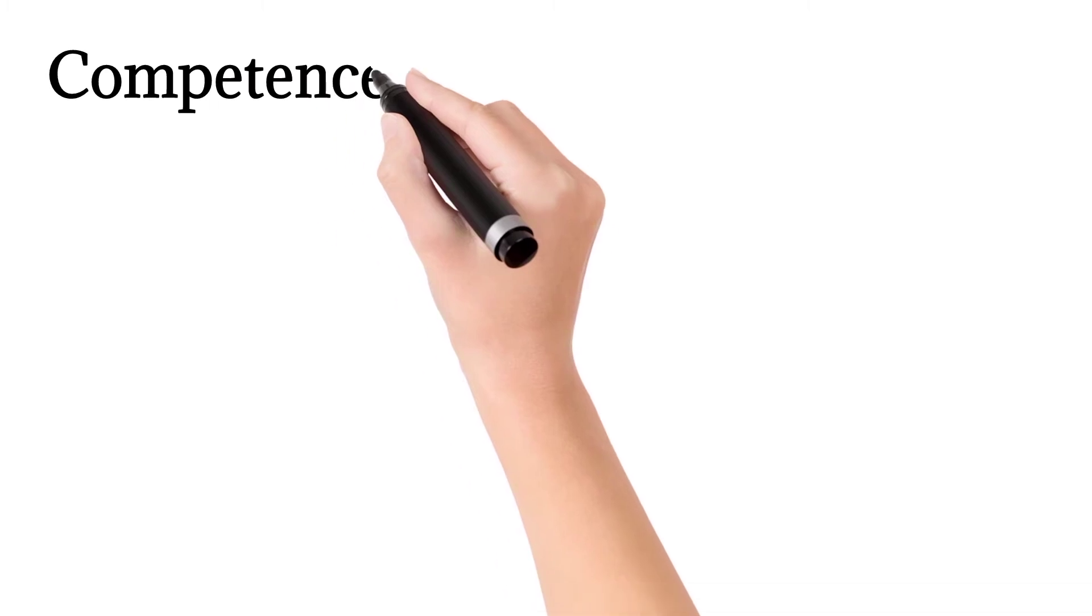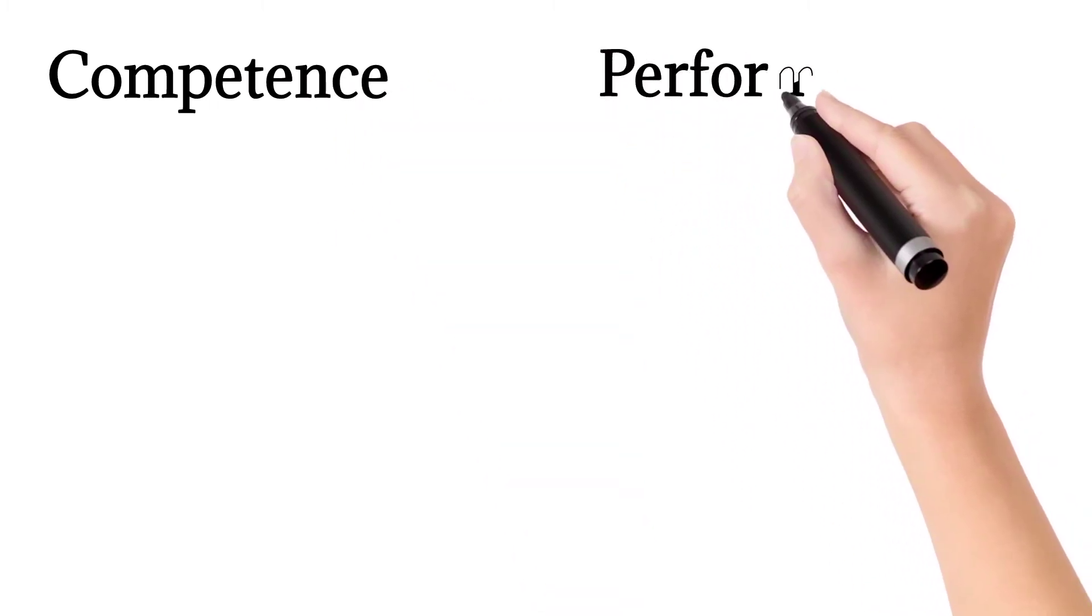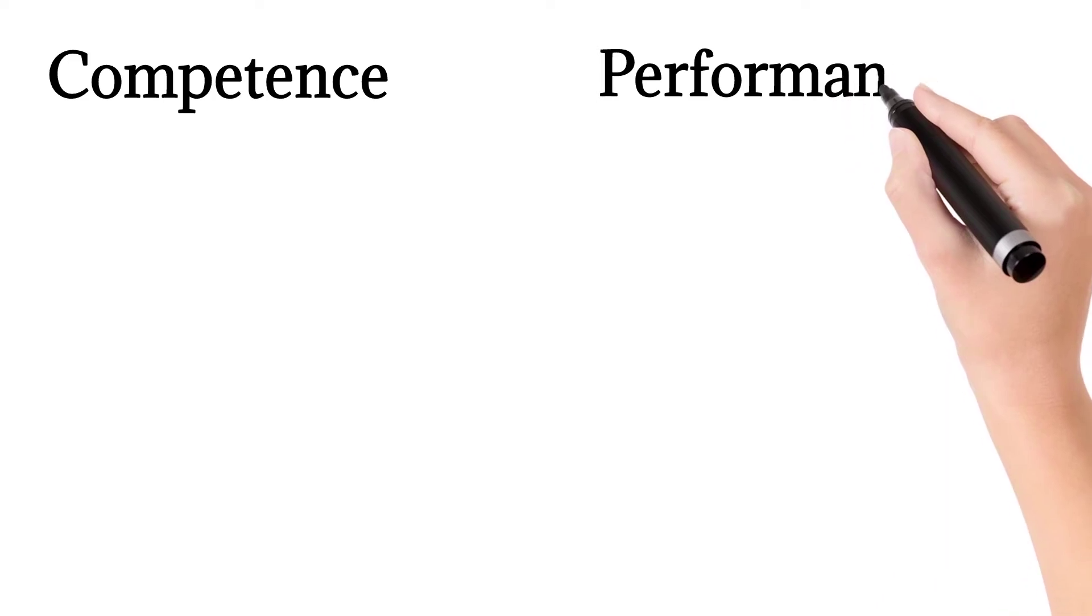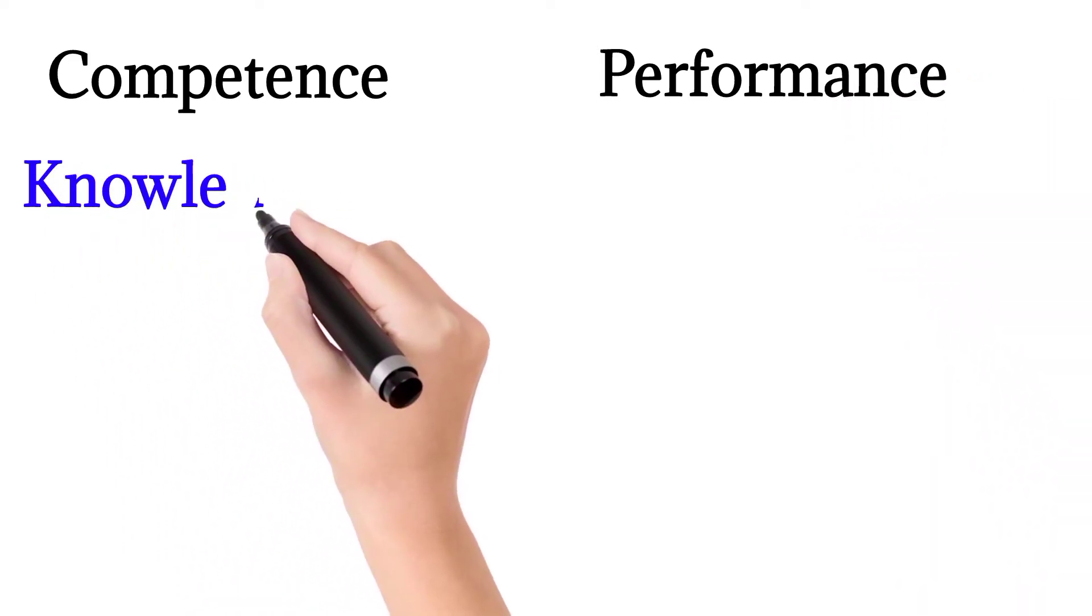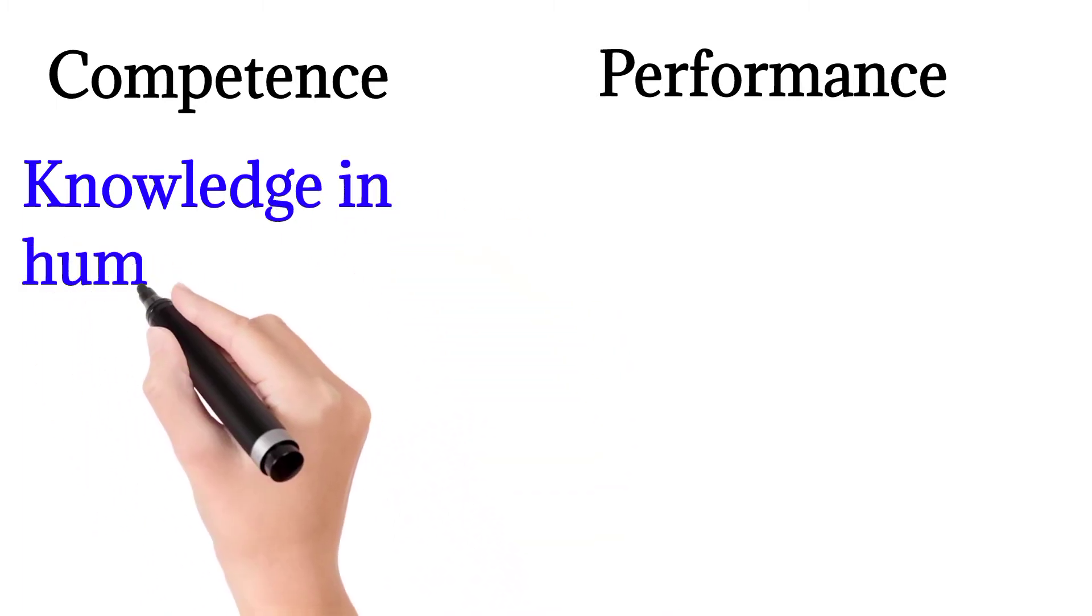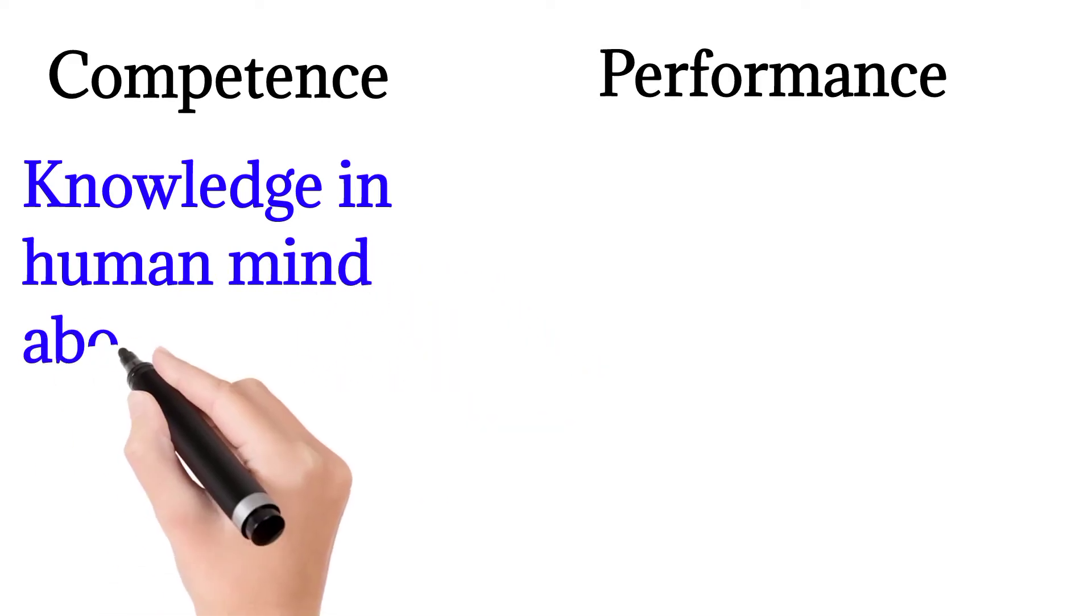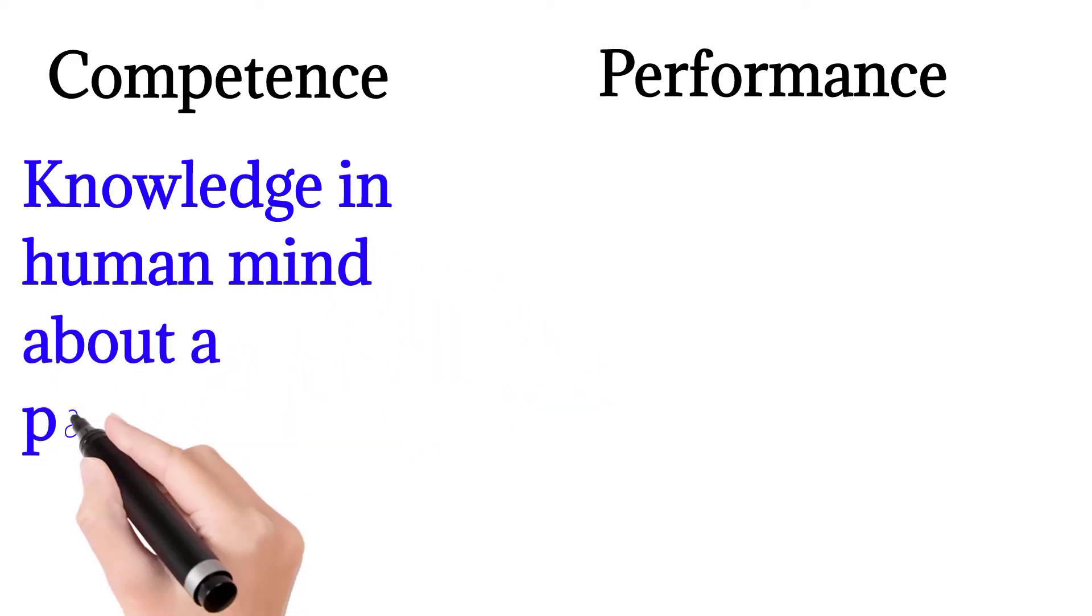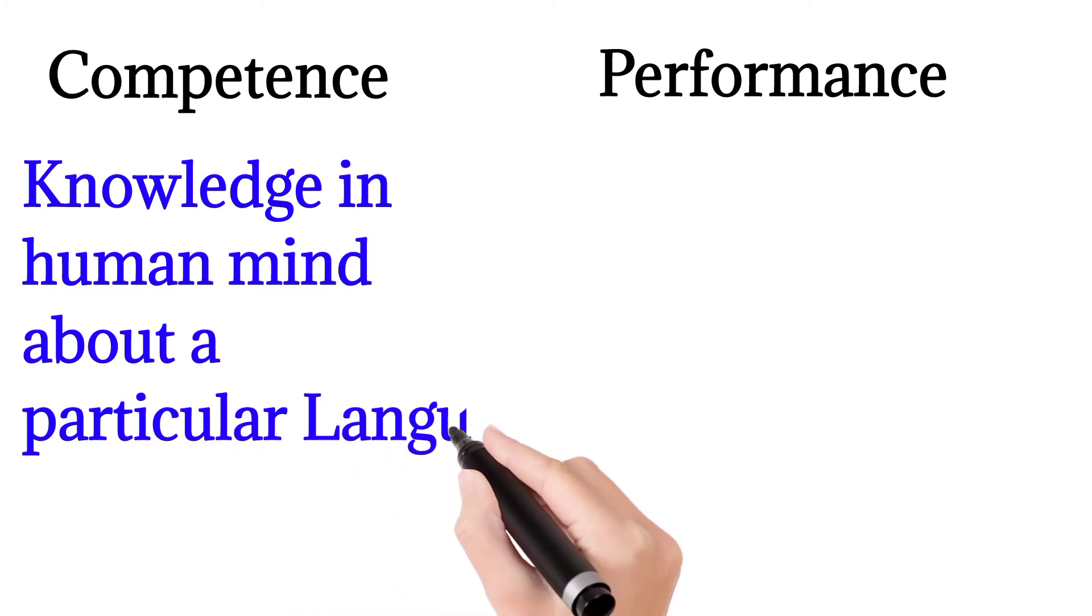What is competence? Competence is a knowledge in human mind about a particular language, especially about his native language. Competence, according to Chomsky, is native speaker's knowledge of his language, the system of rules he has in his mind, the system of rules he has mastered, his ability to produce and understand a vast number of new sentences. So that is the concept of competence, which is simple,